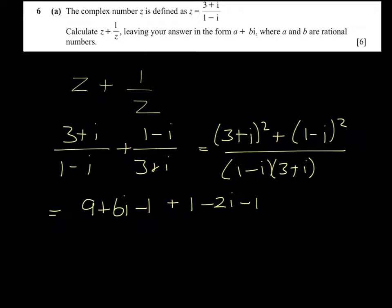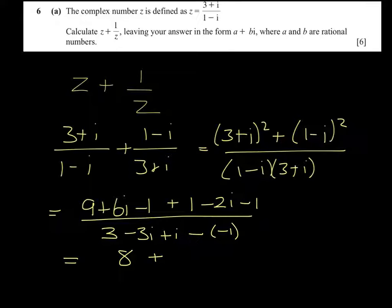That is all over 3 minus 3i plus i minus i squared, so that is minus minus 1. So on the top we have 9 take away 1, 8, plus 1, 9, take away 1 is 8, and then 6i take away 2i, and on the bottom we have 4 minus 2i.